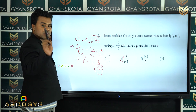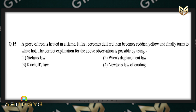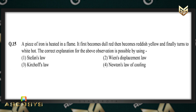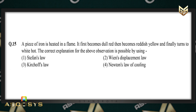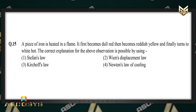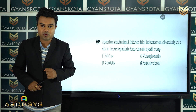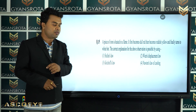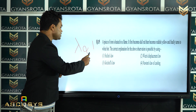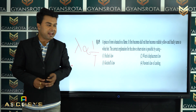Question 15: a piece of iron is heated in a flame. It first becomes dull red, then reddish yellow, and finally turns white hot. The correct explanation for this observation is possible by using Wien's displacement law, which gives the relation between wavelength and temperature — wavelength is inversely proportional to temperature.